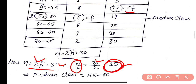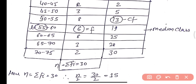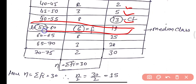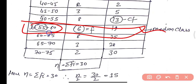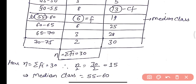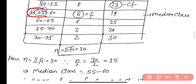Looking at the cumulative frequency column, the value 15 falls in the interval 55–60, since CF goes from 13 to 19 in that class. So 55–60 is the median class. The lower limit l = 55, the frequency of the median class f = 6, and the cumulative frequency of the preceding class cf = 13.